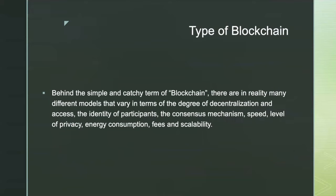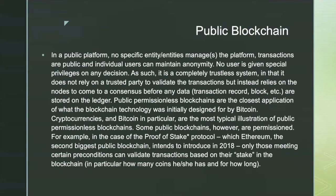Behind the simple and catchy term blockchain, there are in reality many different models that vary in terms of degree of decentralization and access, identity of participants, consensus mechanism, speed, level of privacy, energy consumption, fees, and scalability. The first type is a public blockchain: in a public platform, no specific entity manages the platform — transactions are public, individual users can maintain anonymity, and no user is given special privilege. It is a completely trustless system that does not rely on a trusted party to validate transactions, but instead relies on nodes to reach consensus before any data or transaction is stored in the ledger. Public permissionless blockchains are the closest application of what blockchain technology was initially designed for.